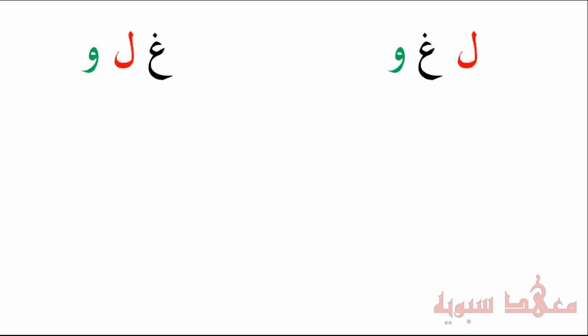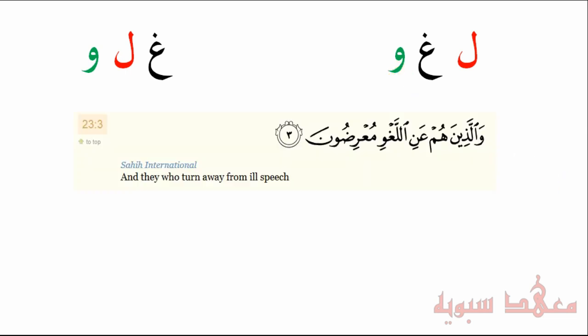If you look at the root of لغة — the لام, the غين, and the واو — the way the Quran uses this three-letter root is for example in the verse: وَالَّذِينَ هُمْ عَنِ اللَّغْوِ مُعْرِضُونَ — 'and they who turn away from ill speech.' So from this root we get the word اللغو, meaning ill speech or useless talk.